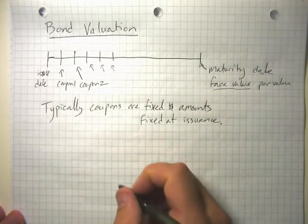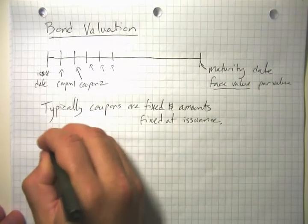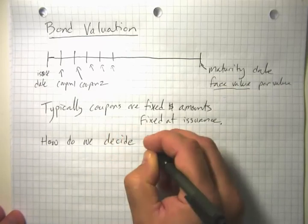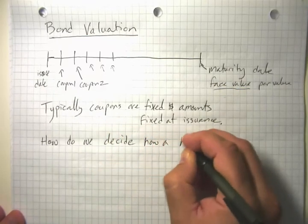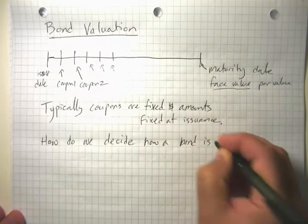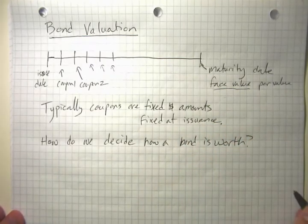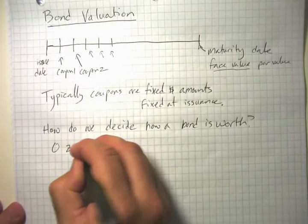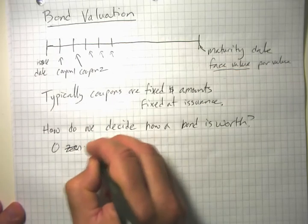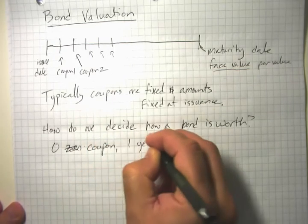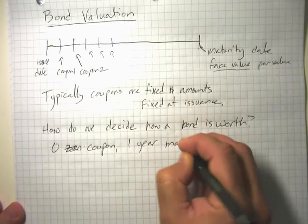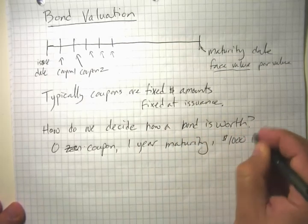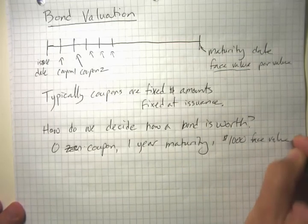So how do we decide how much a bond is worth? I'm going to do a very simple case to start with: a zero-coupon, one-year maturity, $1,000 face value bond.